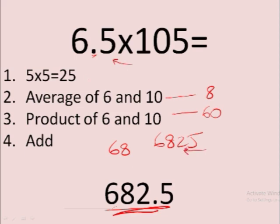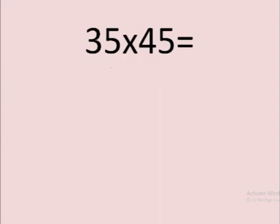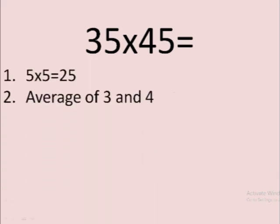Now this will not always be the case. There'll be some problems. For example, here: 35 by 45. First step, just 25. Then we will average these two. Now when we average 3 and 4, the average will be 3.5.